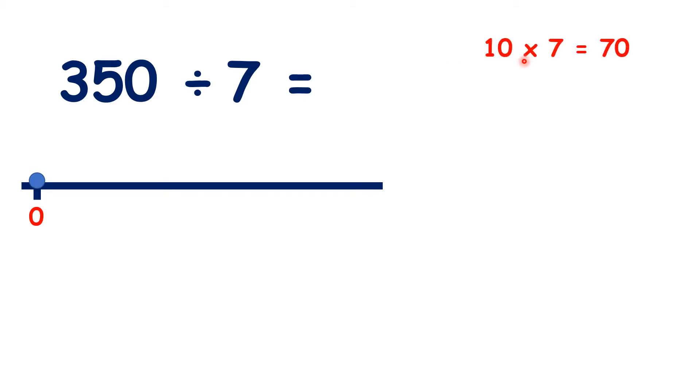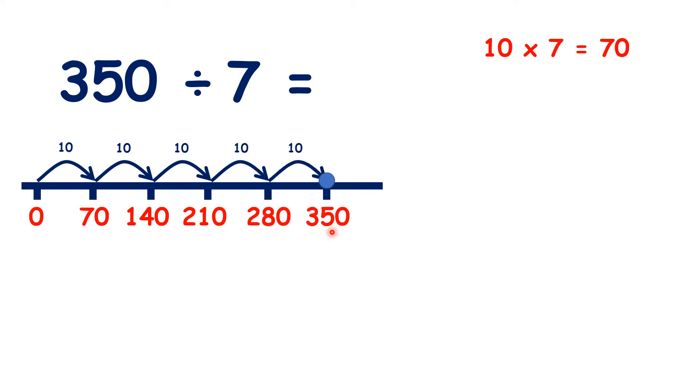But we do know that 10 times 7 is 70, so if we count up in steps of 10 times 7, we have 70, 140, 210, 280, and 350.